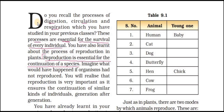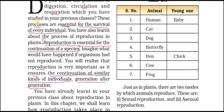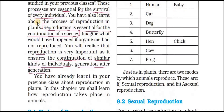For a particular plant or animal species to continue, they need to reproduce. If organisms had not reproduced, their entire species would be wiped out — there won't be a single one of them left. So reproduction ensures the continuation of similar kinds of individuals generation after generation. Now let us learn about how reproduction takes place in animals.